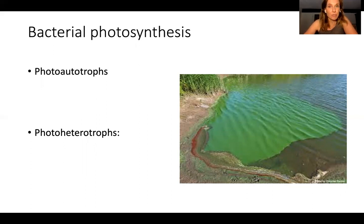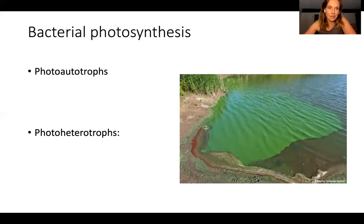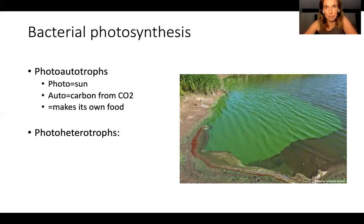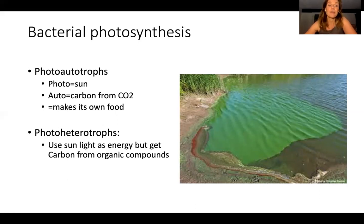Bacteria have more variable biochemistry — they can get their carbon from different sources, not just atmospheric. It could be decomposing organic material or carbon stuck in a rock. Photoautotrophs use sun energy and get carbon from CO2. Photoheterotrophs use light energy but get carbon from other compounds — this is true for purple and green sulfur bacteria.